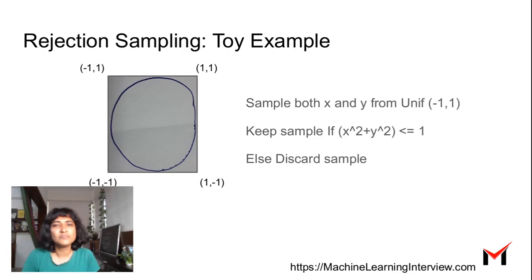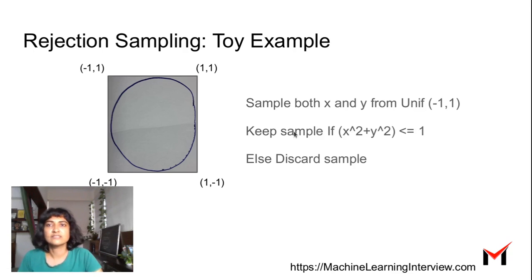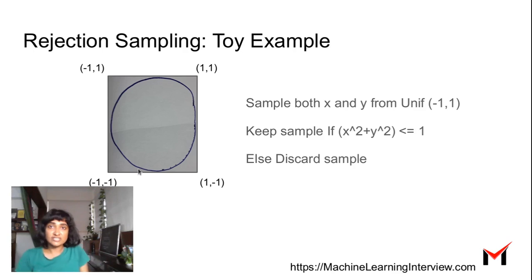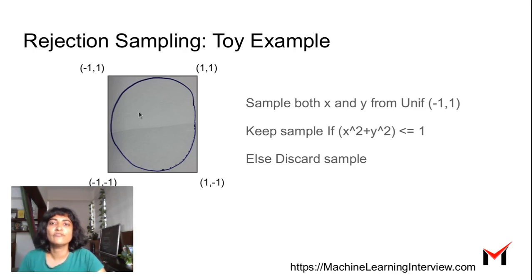Let's look at a simple toy example of rejection sampling, where we have to sample points uniformly from a circle in 2D. What we can do is draw a square around the circle. Sampling points from the square is super easy — we just draw an X and a Y both uniformly between minus one and one. You pick a random X and a random Y and you get some point in the square, which could be outside or inside the circle.